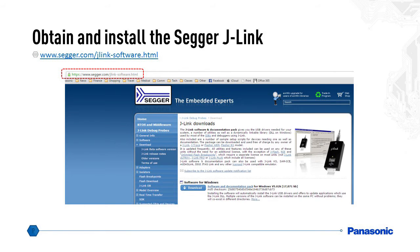To obtain the J-Link, go to www.segger.com/jlink-software.html. Download the file, double click on it, and follow the instructions. Keep the default settings here as well.